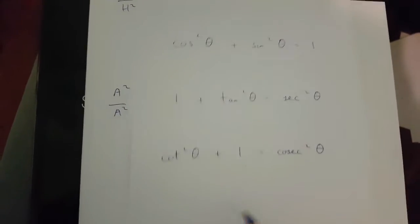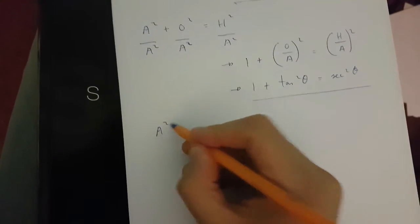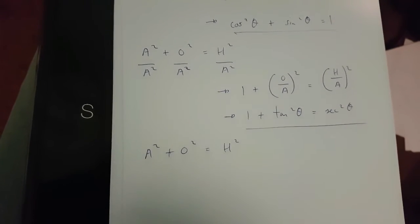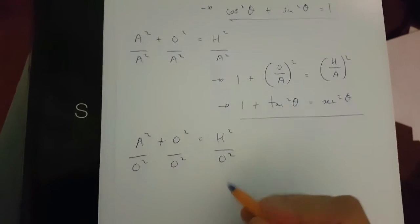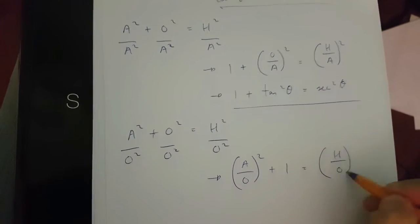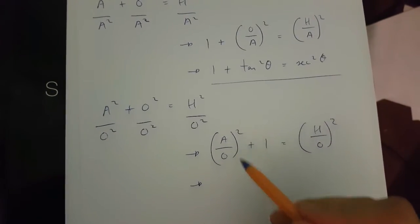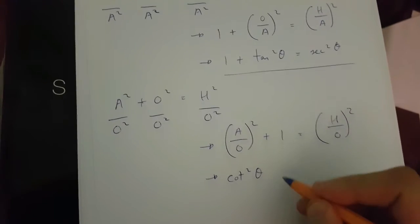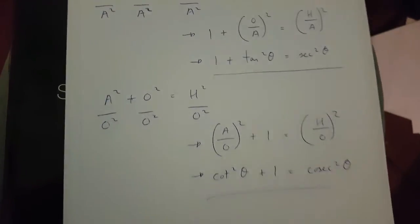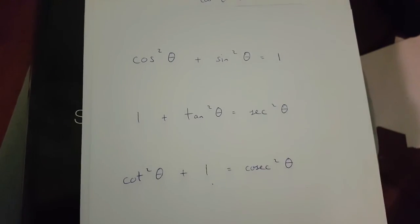Now let's do the final one using the same technique. I'm going to write down A squared plus O squared equals H squared, and I'm going to divide each and every element of this equation by O squared. If I do this, what I end up getting is (A/O)² plus 1 is equal to (H/O)². It turns out A over O is cotθ and H over O is cosecθ. So what I end up getting here is cot²θ plus 1 is equal to cosec²θ. And this means we've derived all of the trigonometric identities on this sheet of paper.